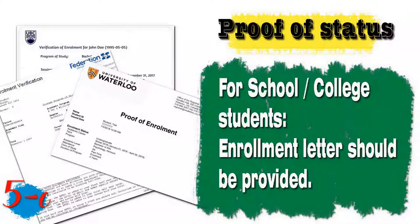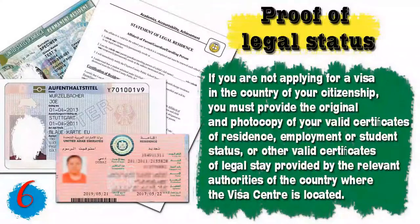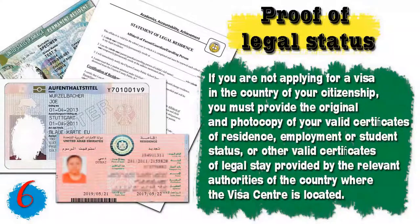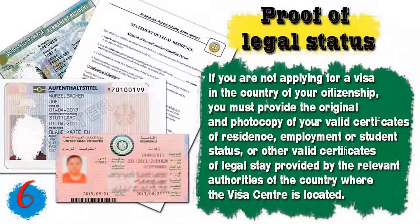If you are a student, an enrollment letter from your school or college must be provided. Sixth, for foreigners not applying in their country of citizenship, you must provide the original and a photocopy of your valid certificate of residence, employment, or student status — or other valid certificates of legal stay provided by the relevant authorities of the country where the visa center is located.